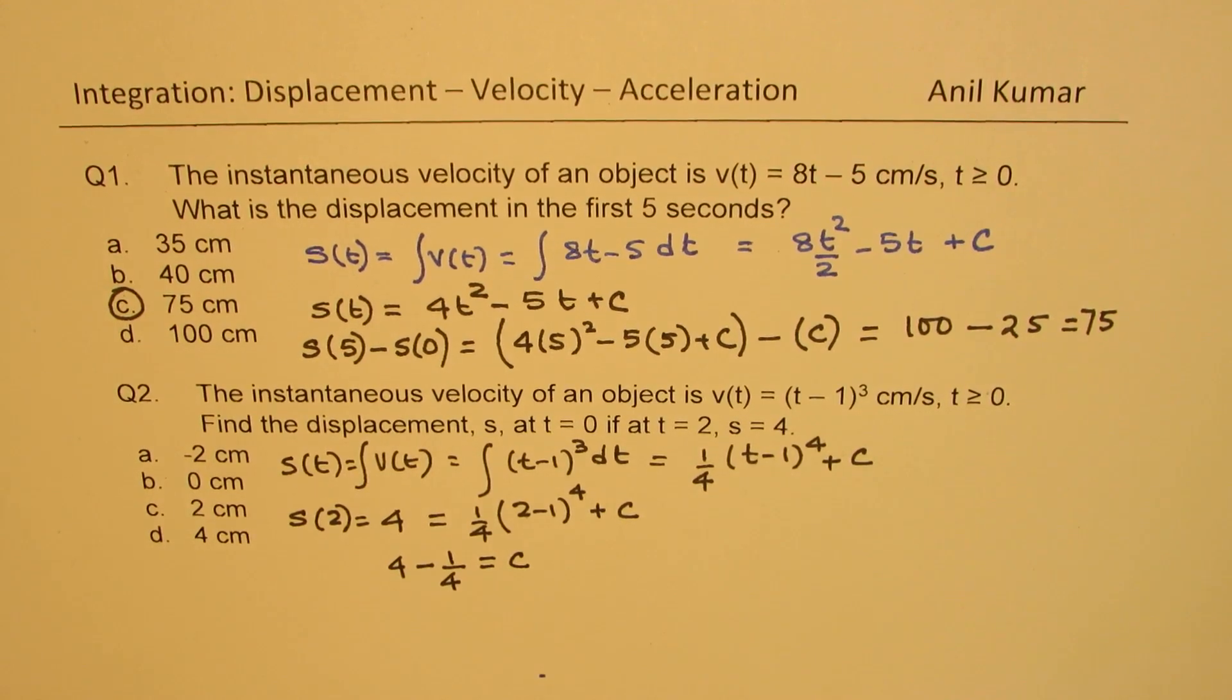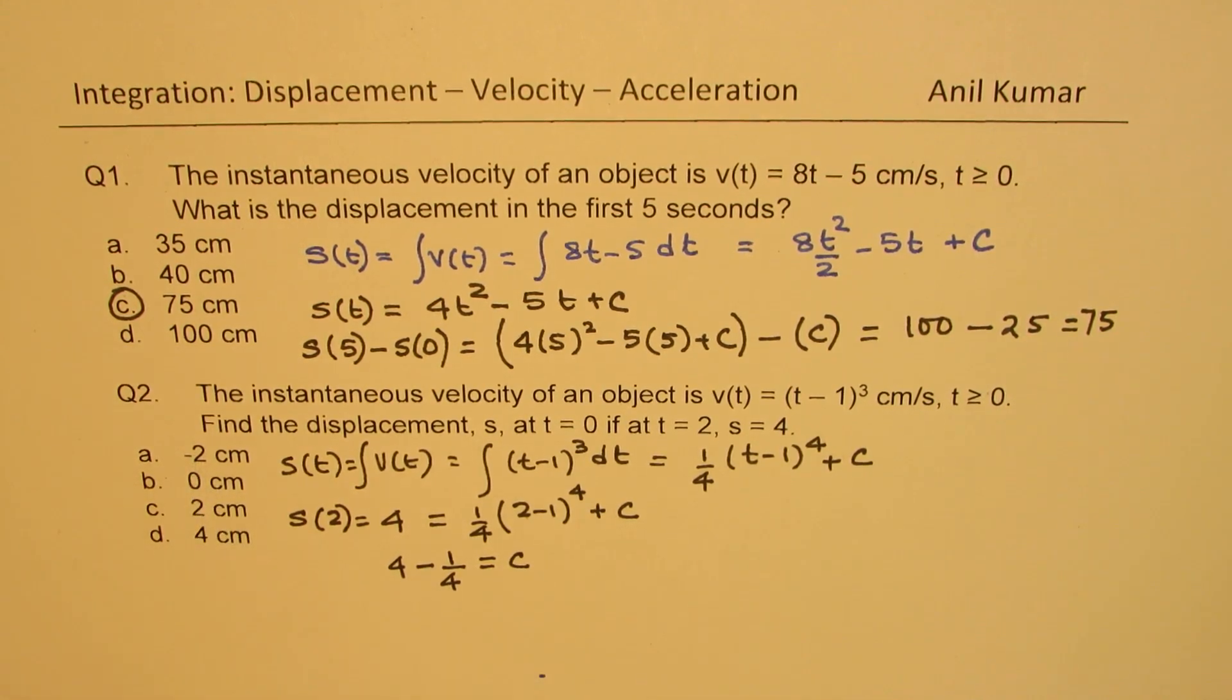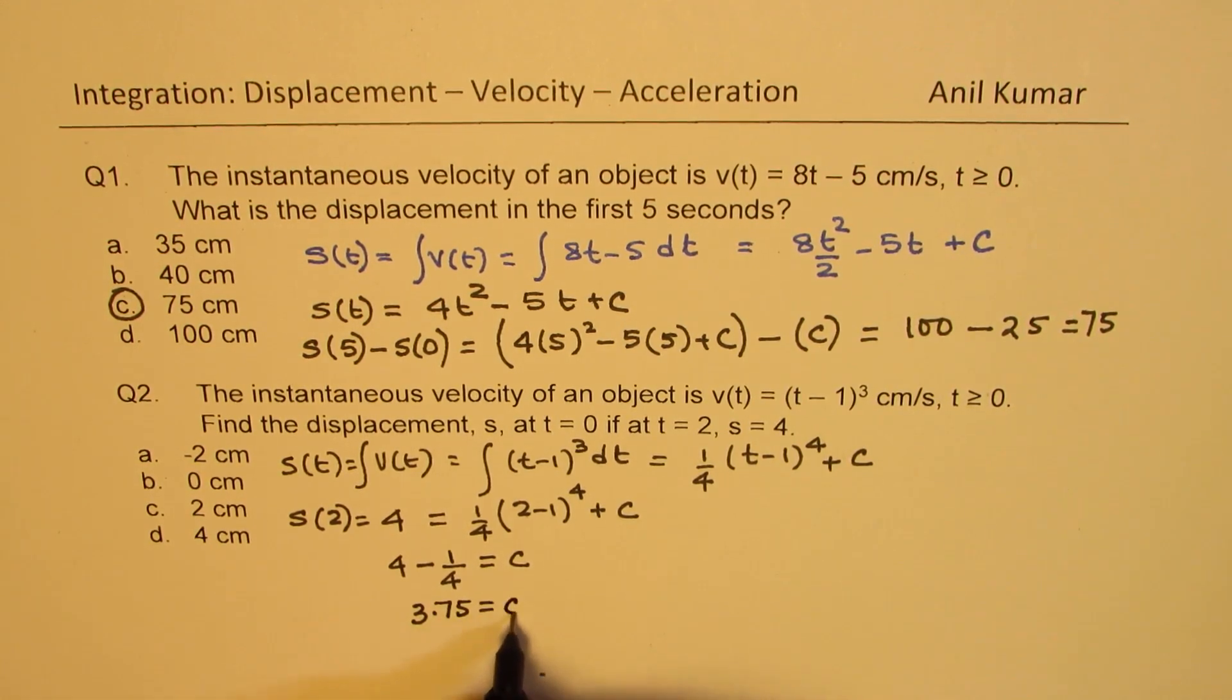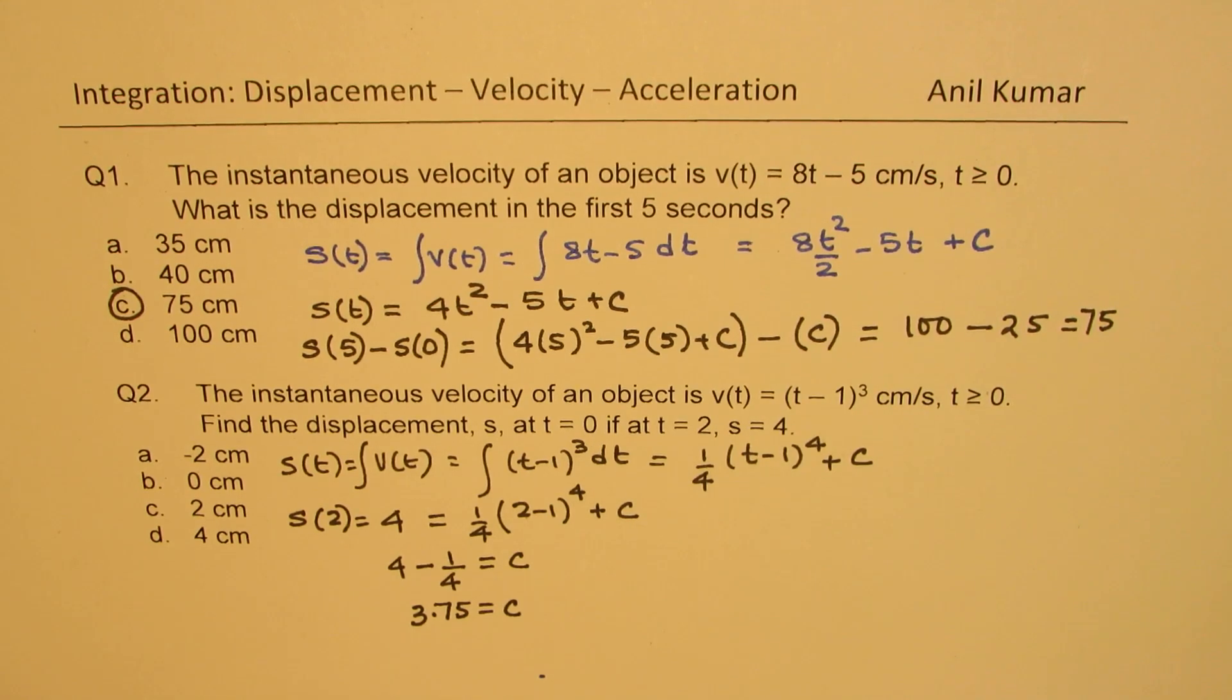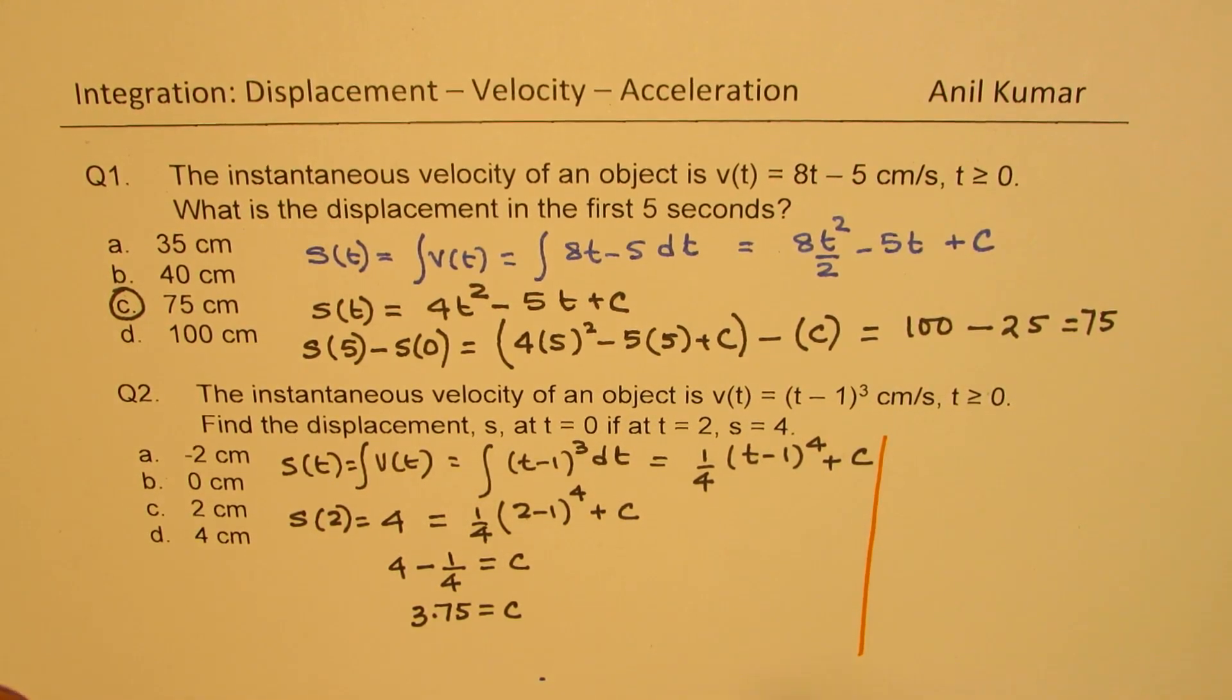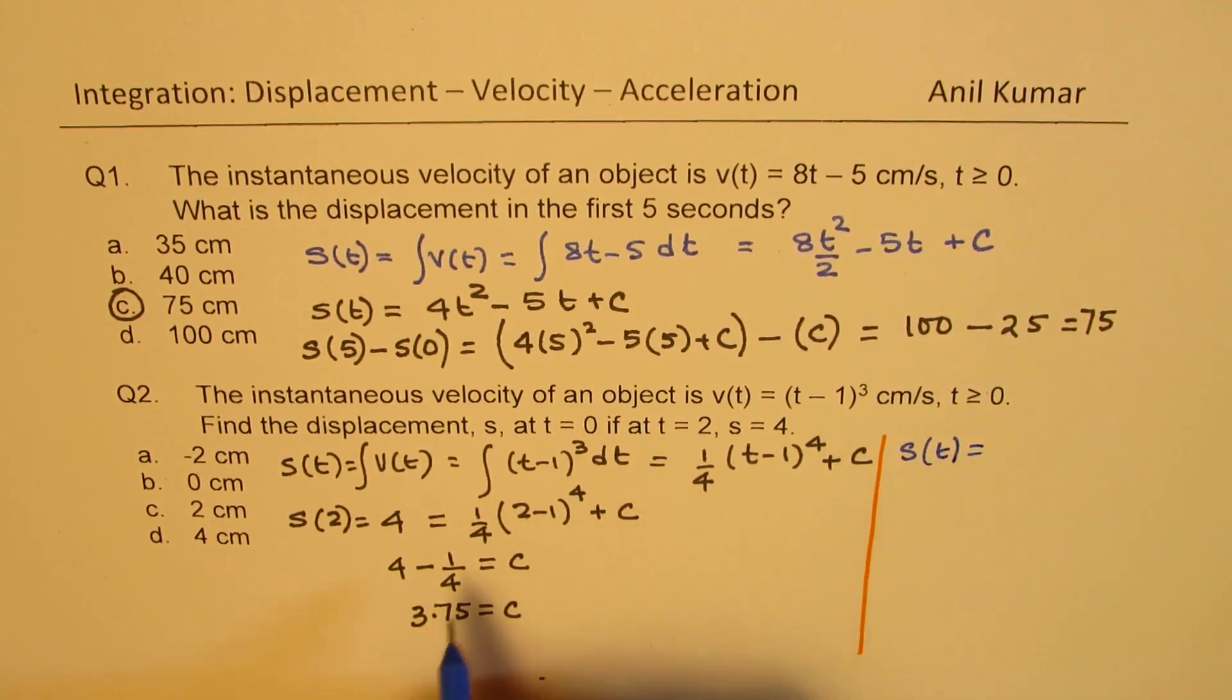So that gives you 3.75. Since the answers are in numbers, 4 minus quarter will be 3.75. So c is 3.75. Now we want to find the value at t equals 0. So let me use the right side of the page to find the answer.